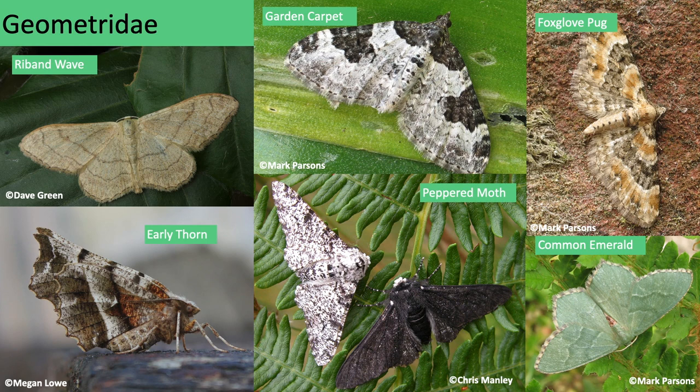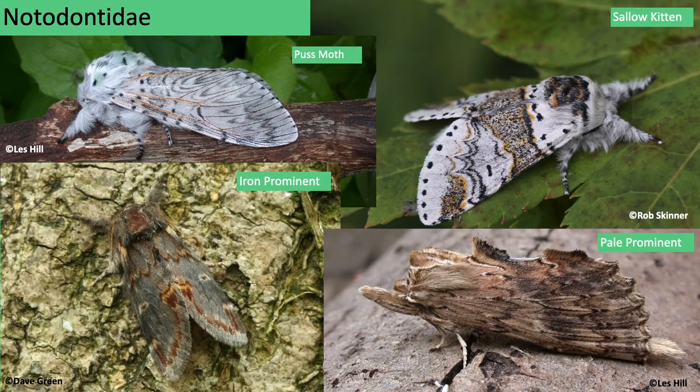Geometridae is one of two large macro moth families with 300 species in the UK, and it's split into five sub-families: the mochas and waves, carpets and pugs, orange underwings, thorns, beauties and umbers, and the emeralds. Most species have broad, rather triangular forewings and slender bodies, enabling low energy flight rather than power and speed. They're easily distinguished from butterflies by their antennae — often feathery in males and slender in females, but never clubbed like butterflies.